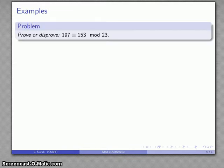Let's look at this example: prove or disprove 197 ≡ 153 mod 23. Remember, if a ≡ b mod n, then n must divide the difference a minus b.